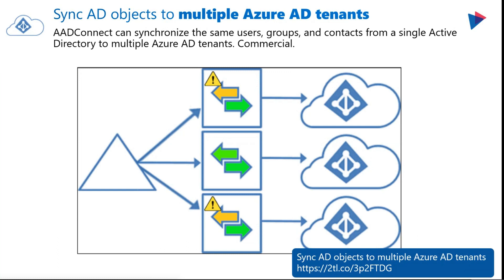On the Azure AD Connect side, you can now synchronize users, groups, and contacts from a single Active Directory to multiple Azure AD tenants. These tenants can be different Azure environments such as Azure China or Azure Government, or the same Azure environment such as two tenants both in Azure Commercial. Different sync scopes and sync rules are supported for different tenants. However, only one Azure tenant sync can be configured to write back to Active Directory for the same object — including device and group write-back and hybrid Exchange configurations. The only exception is password write-back.